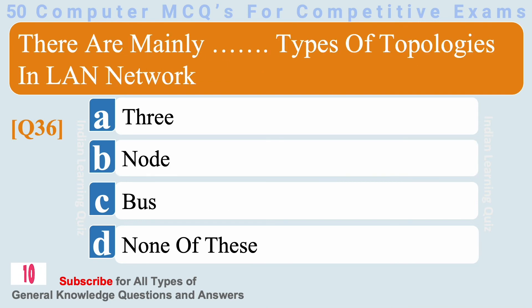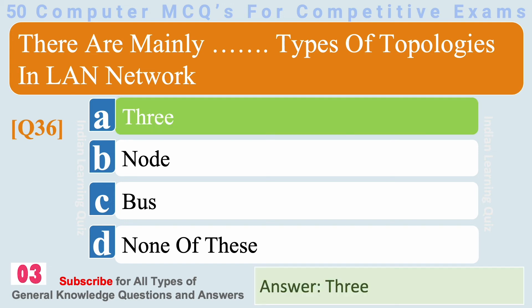There are mainly 3 types of topologies in a LAN network. Answer: 3.